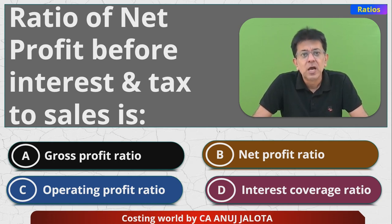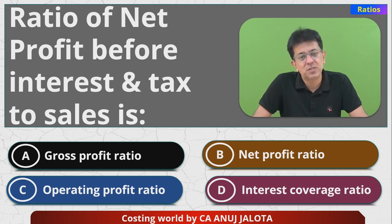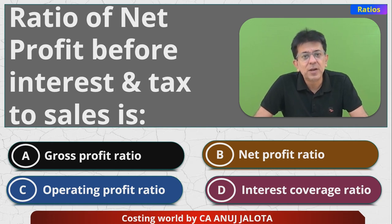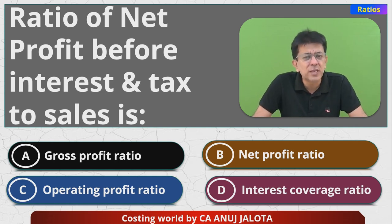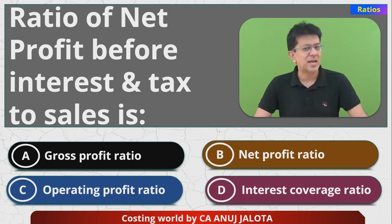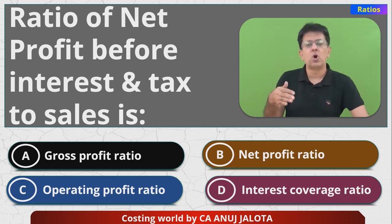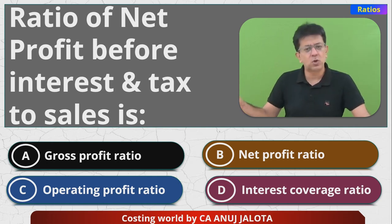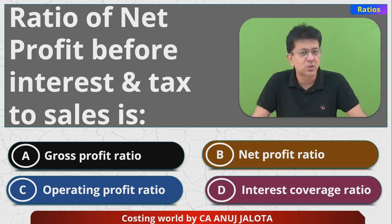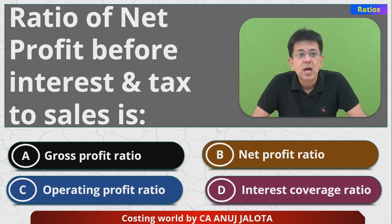Option D — interest coverage ratio — is not a profitability ratio. It measures how many times you are earning your profit compared to your interest commitments. Higher the ratio, the better, because risk comes down. It is usually calculated as EBIT upon interest, although some alternate formulas also exist.